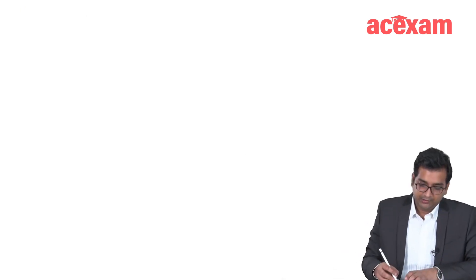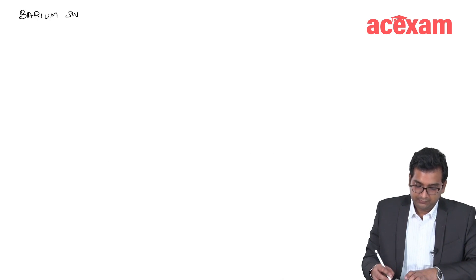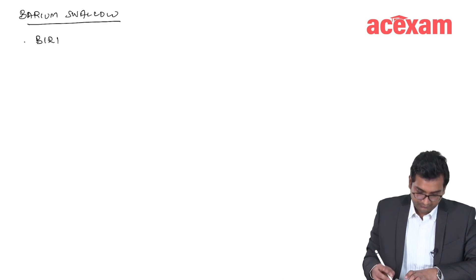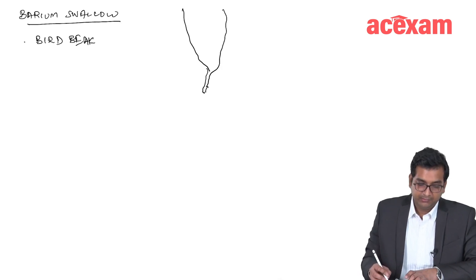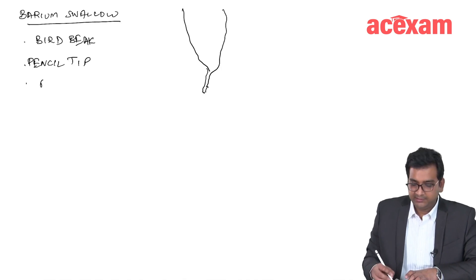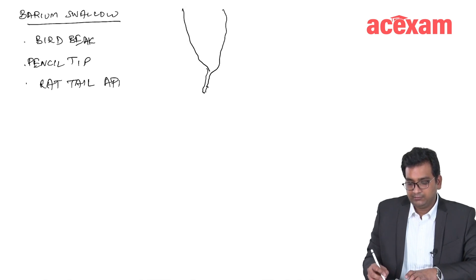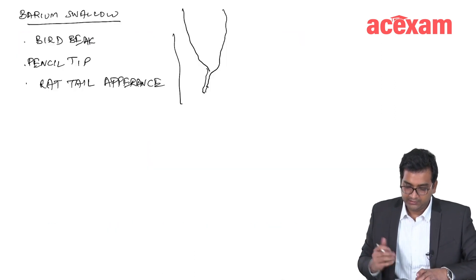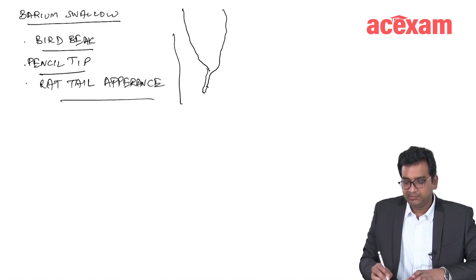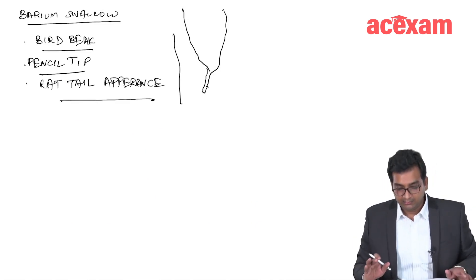On barium swallow, the finding is a bird beak appearance, also known as pencil tip or rat tail appearance in achalasia cardia.